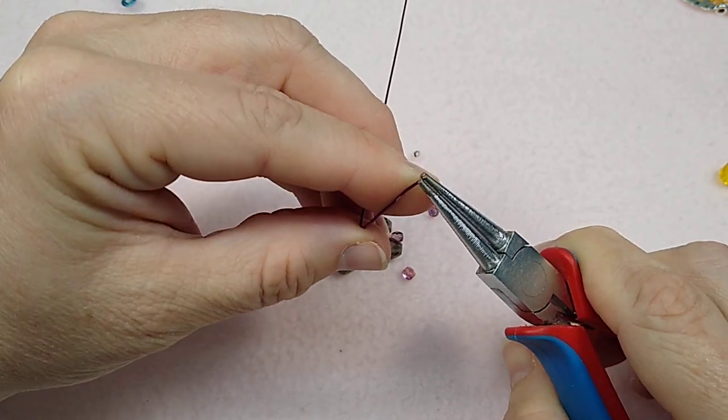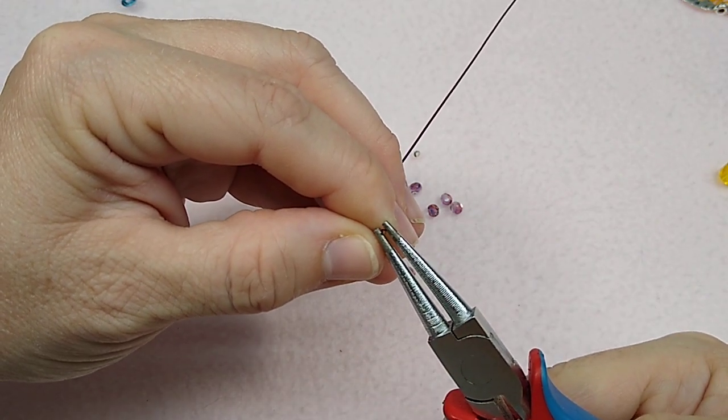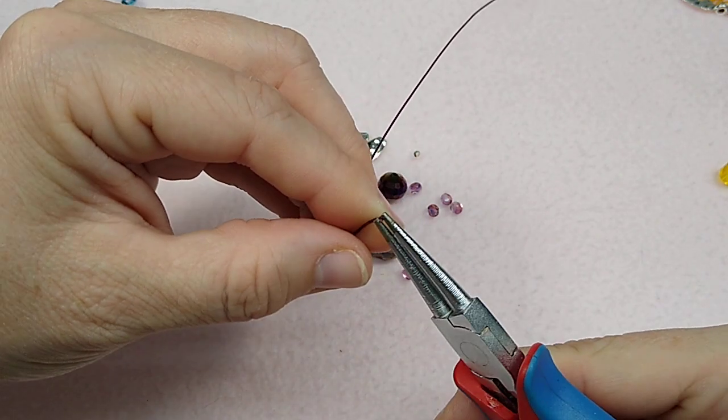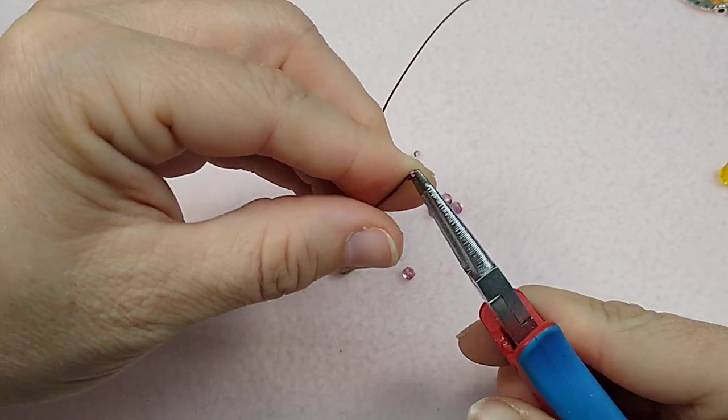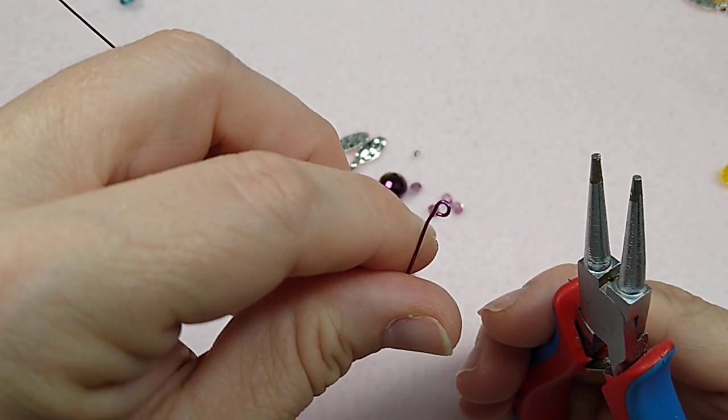And I get down at the very, very tip of my chain nose pliers and I start rolling and I make a loop, a very, very small, tiny, tiny loop in the end, as small as you can get it. Okay. So just like that.